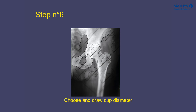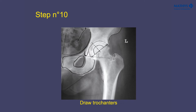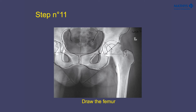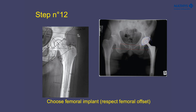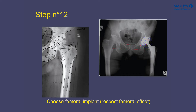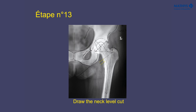According to the cup you want to use, you use a template of that cup and choose and draw the cup diameter. Then on the femur side, you draw the lesser and greater trochanter, draw the femur — especially the canal — and then according to the stem you want to put, you choose the template. According to the restoration of the femoral offset, the last step is to draw the neck level cut that you have to reproduce during your surgery.